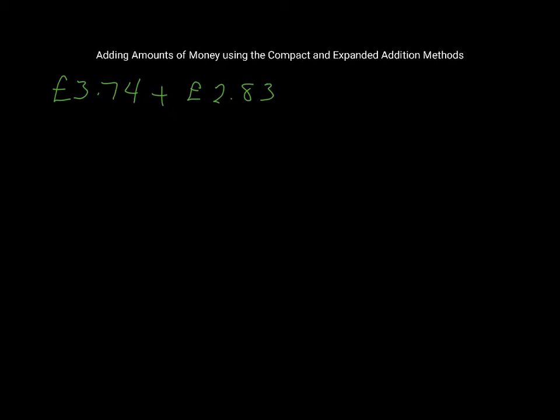So the compact method, I'll just write CM so we know it's the compact method. It's always a good idea to estimate what your answer is going to be just to make sure that you don't come up with some wildly inaccurate answers. I'm going to write here in brackets my estimates for these two numbers and add them together, and that'll give me something to compare to when I'm done.